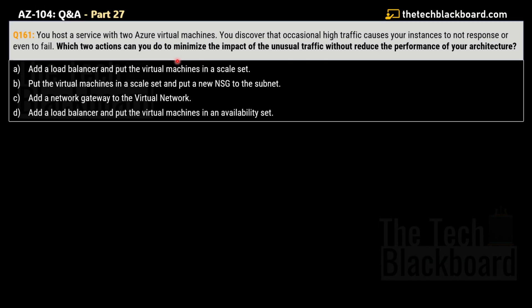Let's begin Part 27 with question number 161 — a really interesting question where you'll learn a lot of concepts on Azure virtual machines and load balancing. The question says: you host a service with two Azure virtual machines and discover that occasional high traffic causes your instances not to respond or even to fail. Which two actions can you take to minimize the impact of unusual traffic without reducing the performance of your architecture?